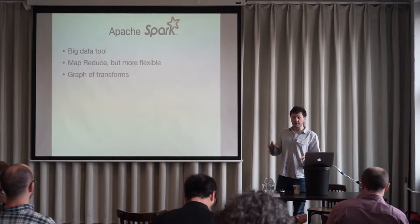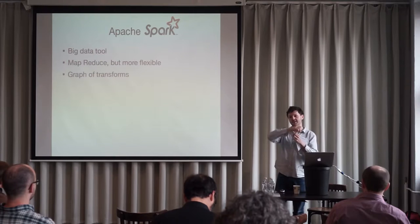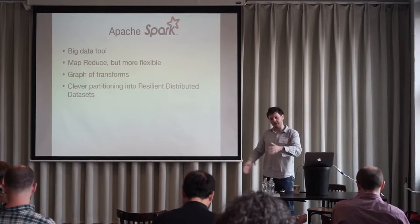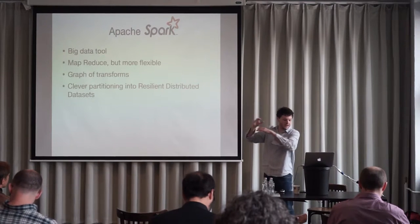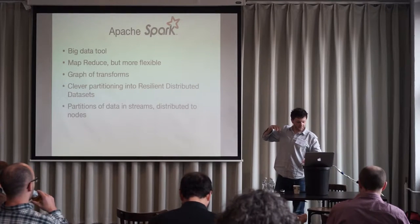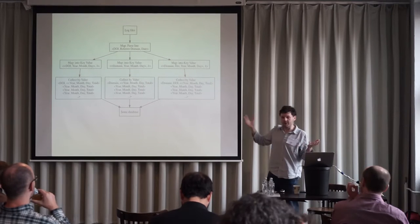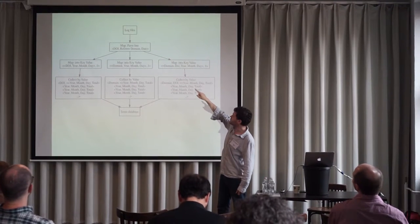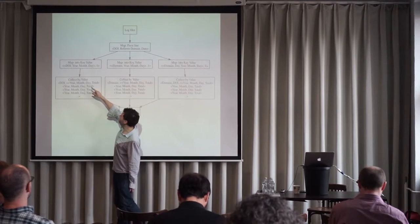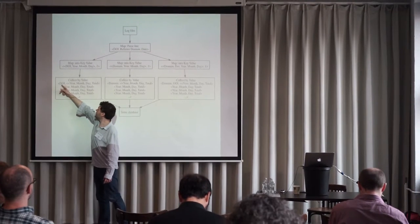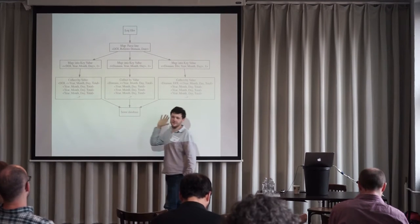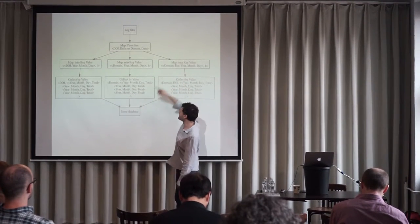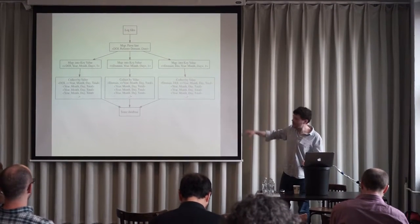Spark is like MapReduce but a lot more flexible. There's a graph of transformations you specify — your input data goes through all these processes and comes out the other end. It has clever algorithms for partitioning data: you put your data into a cluster, it splits into partitions on different servers, and tries to keep data loaded into each node. Here's an example: files come in at the top, there's a map stage which parses each line into a triple of DOI, referrer domain, and date — then mapped to DOI year-month-day and counted. In the end, for every DOI and year-month-day, you get a count of how many times that DOI was visited each day. Spark caches between stages and figures out the most efficient path through your data.